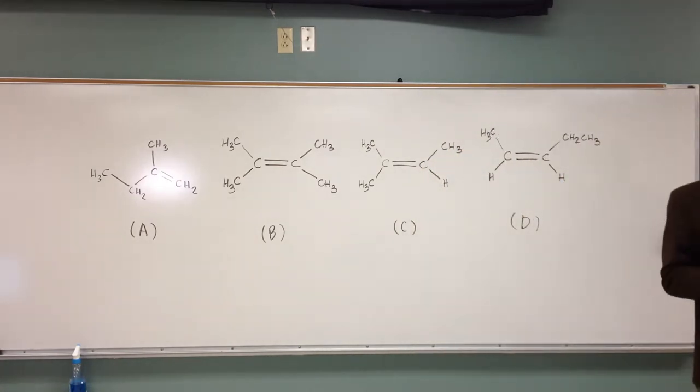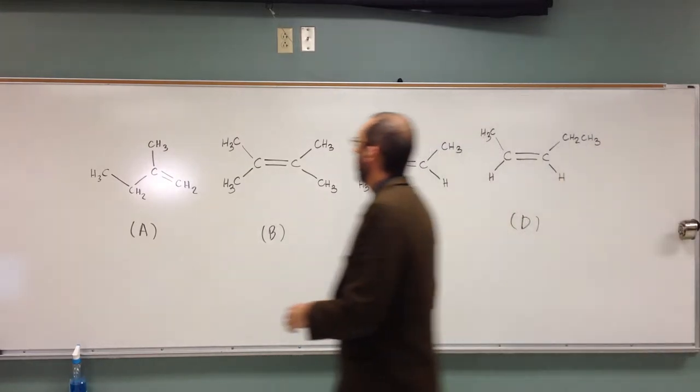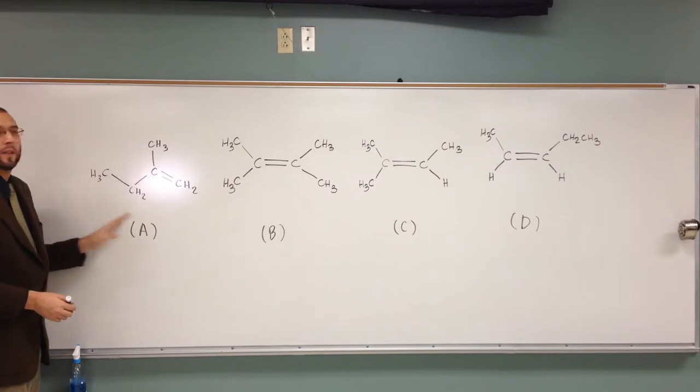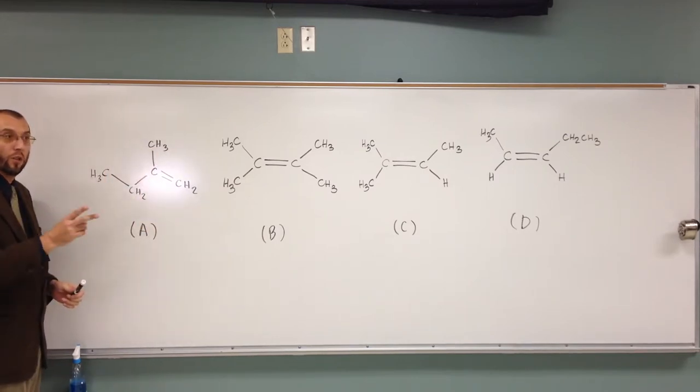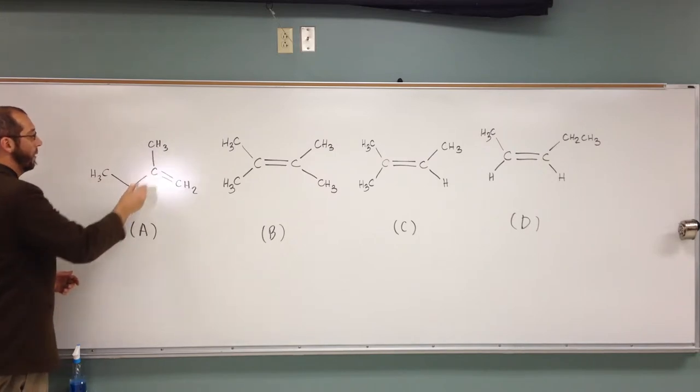So, we're talking about substitutions around the what? Double bond. Double bond, okay? So, when we look at A here, how many substituents does it have around that double bond? Two. Just two, right? So, the methyl group and the ethyl group.